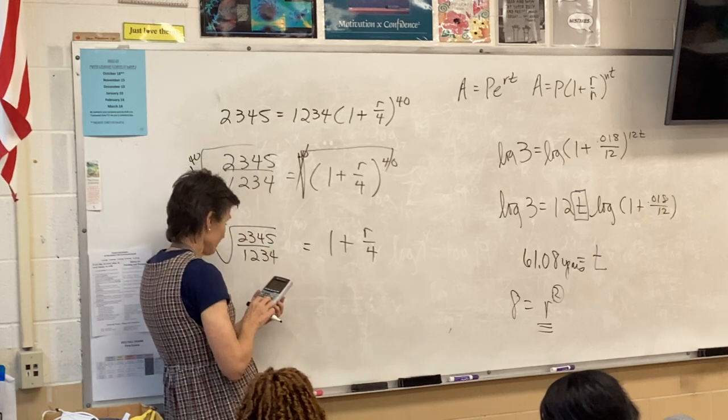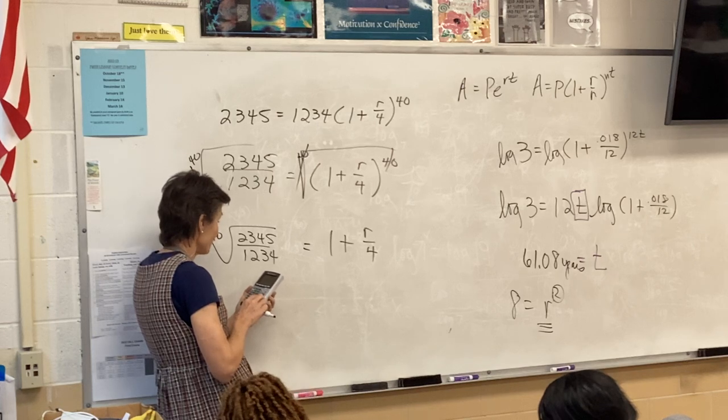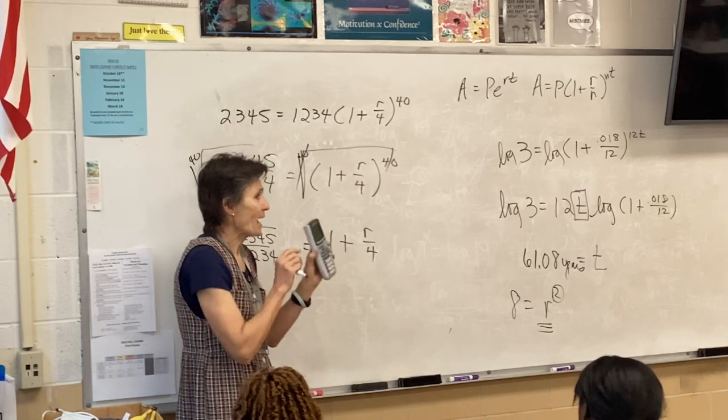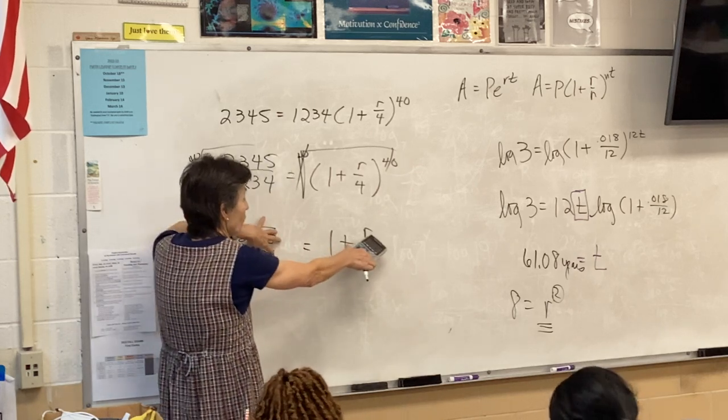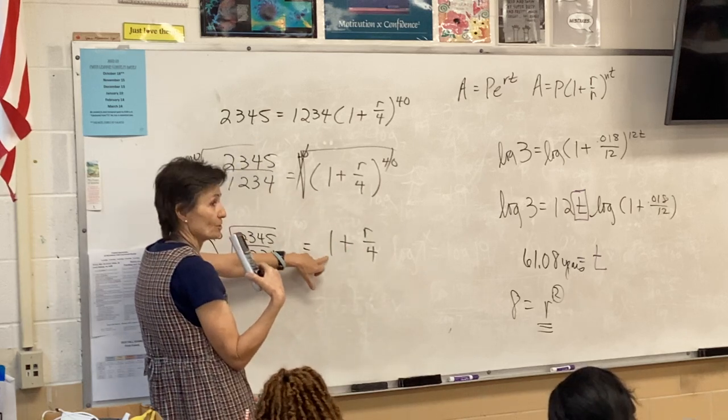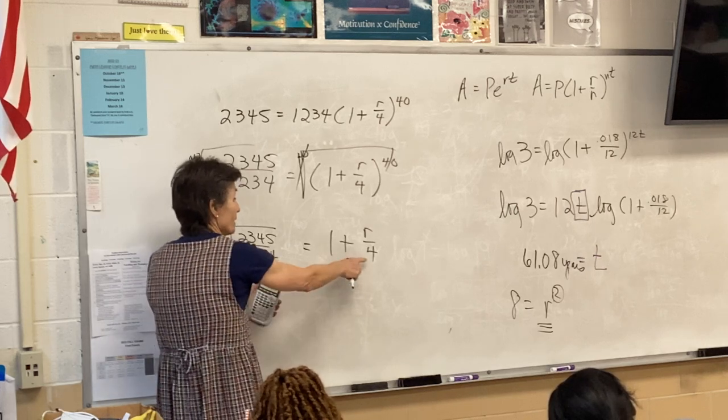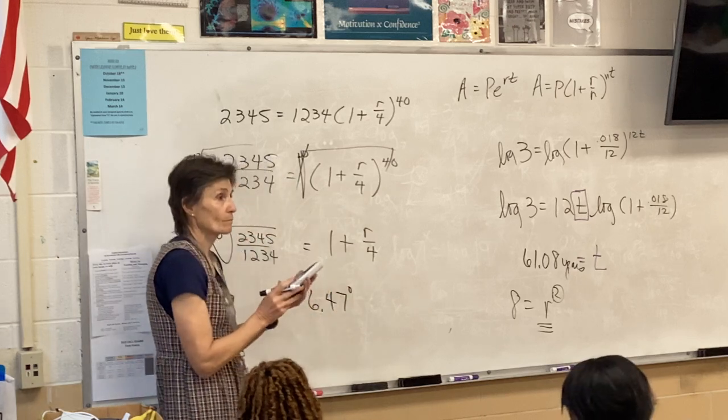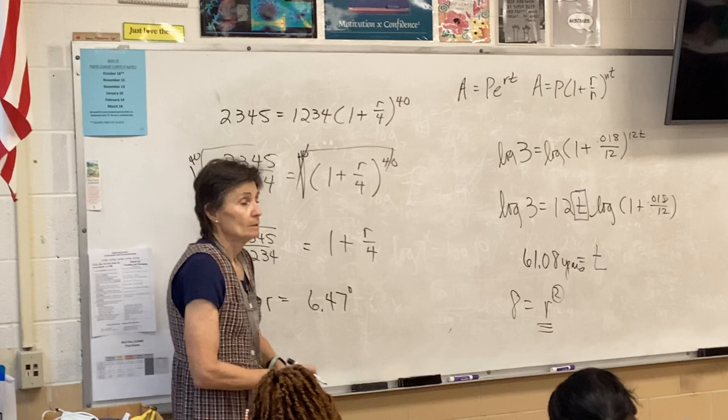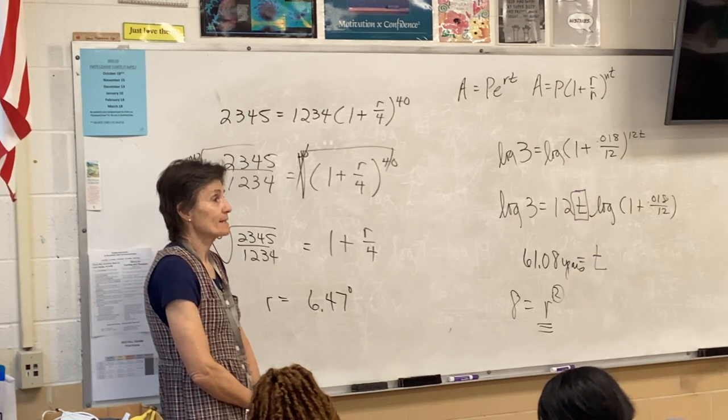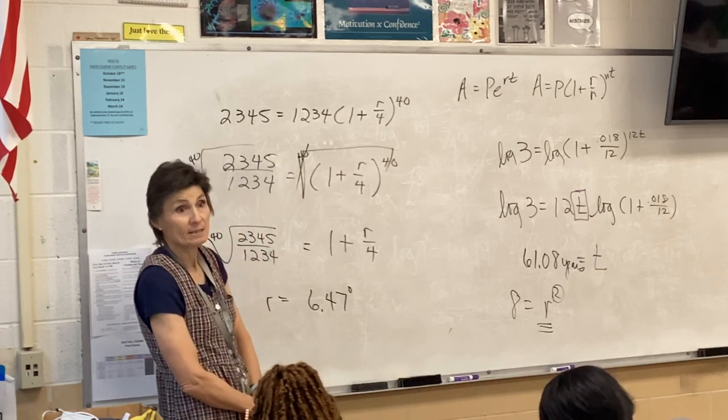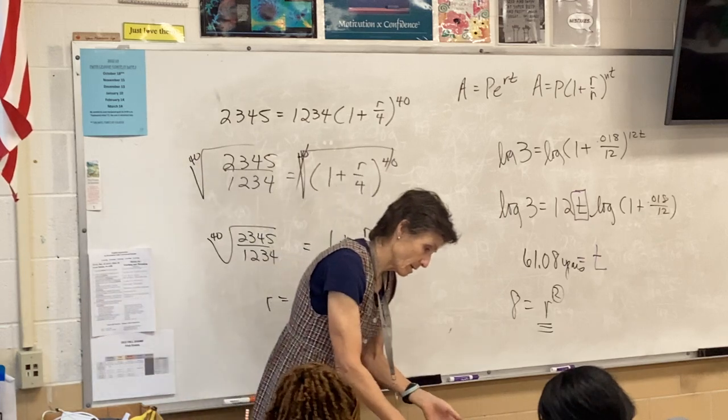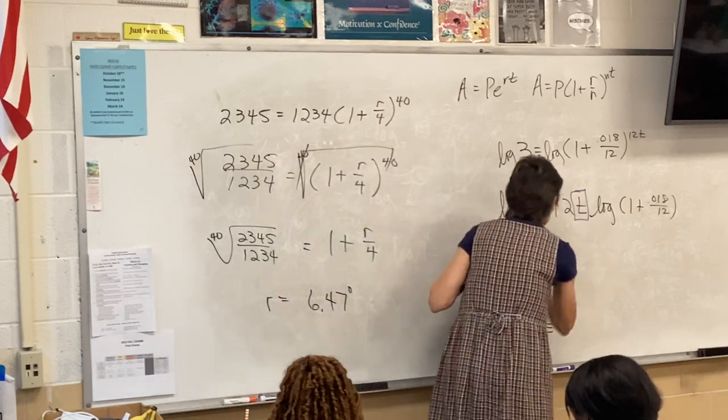Now that isn't your answer. That's what this is. So we're solving for R. So you're going to take this answer, and what are you going to have to do? Subtract the 1, and then multiply by 4. So I got about 6.47%. I actually got 0.0647, but since it said interest rate, I went ahead and made that a percent, because that's what interest rates are.